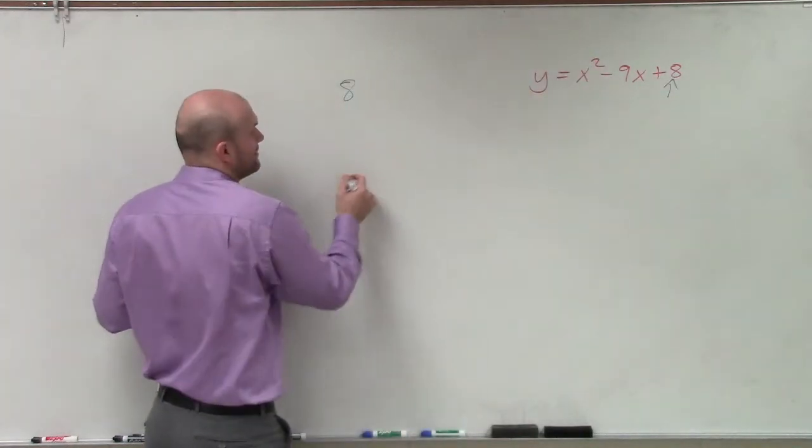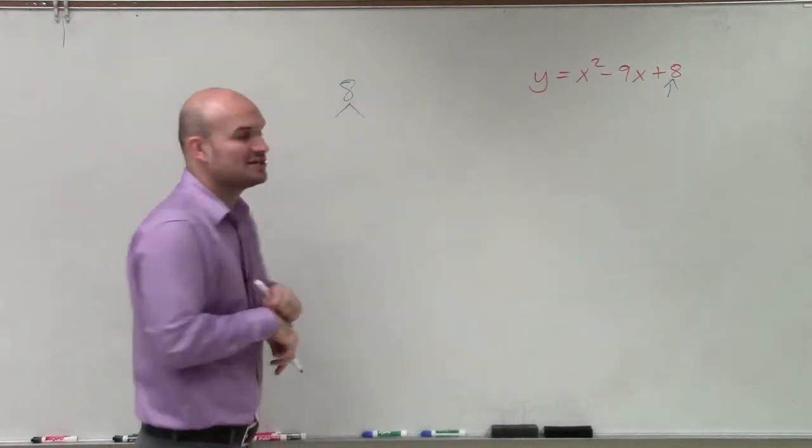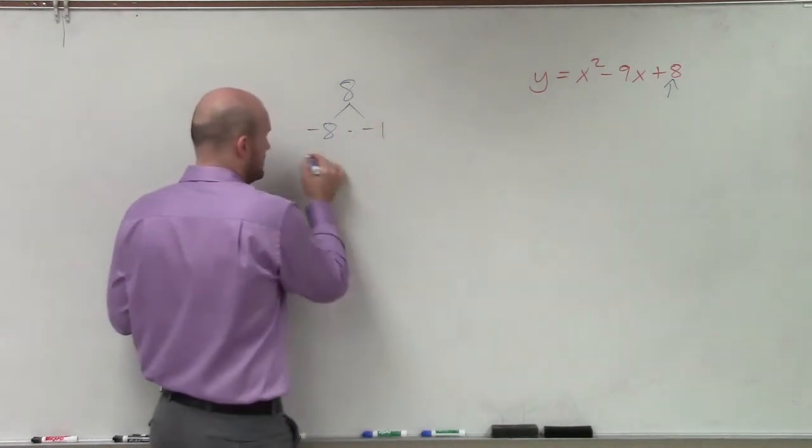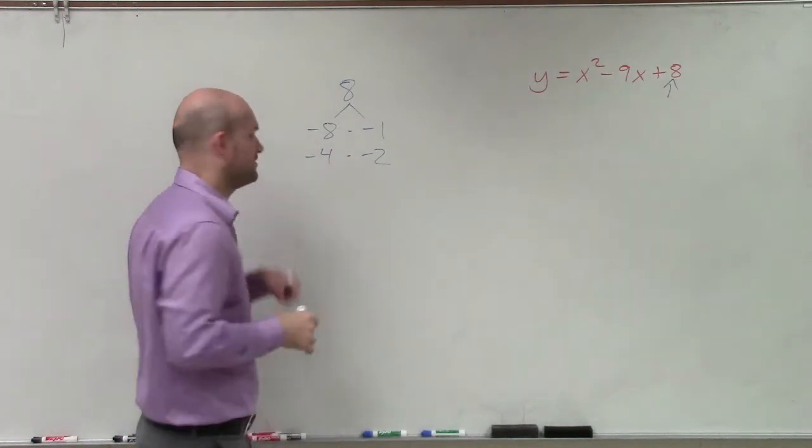When we break down the factors of 8, we notice that those two factors have to add to give us negative 9. So our factors are going to have to both be negative. I could do negative 8 times negative 1, negative 4 times negative 2, and those are all the factors.